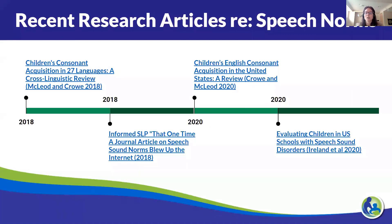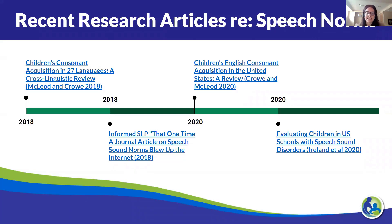So the research. Those of you who have heard me speak over the last couple of years know that in 2018, McLeod and Crow put out a review of studies across 27 languages looking at the age of acquisition for speech sounds. They found that 90% of kids mastered 93% of sounds by age five, and they had these really pretty infographics — and everyone started freaking out. Marie Ireland swept in right away and said, wait a minute, this is just the normative development; this doesn't have anything to do with eligibility in schools. So we need to pause.